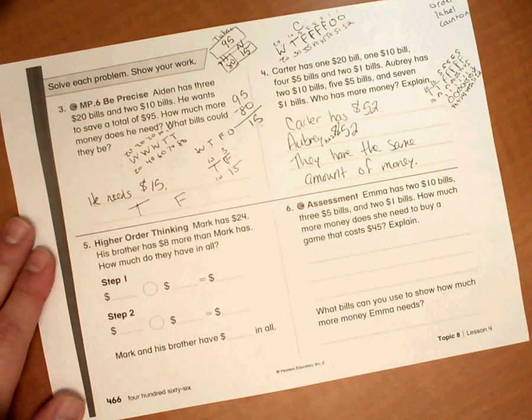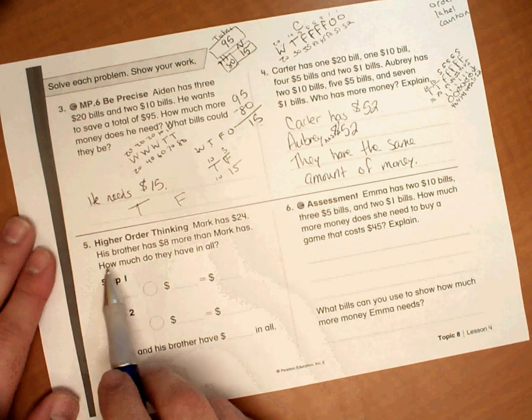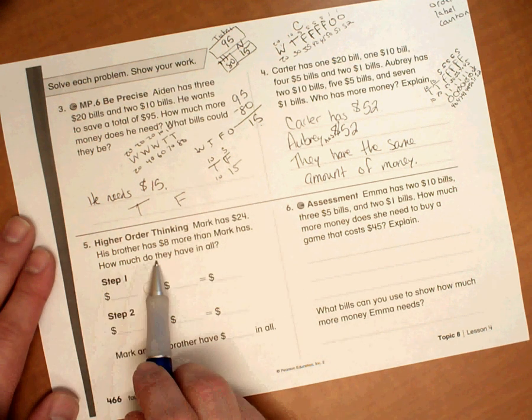This is number five from homework 8-4. Mark has $24. His brother has $8 more than Mark has. How much do they have in all?